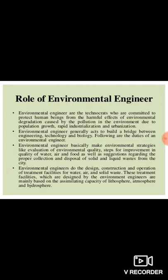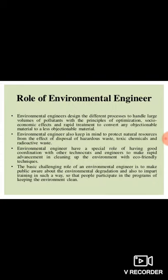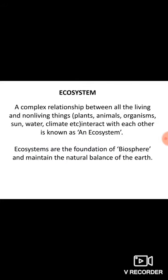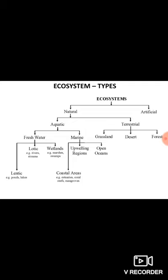We have seen the role of an environmental engineer and what your role as an engineer is for the betterment of the environment. We covered eight different points under this category. Then in lecture two we saw about the ecosystem, which is a community of living organisms in conjunction with the non-living components, and we saw the definition of the ecosystem and different types.